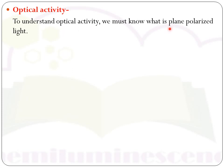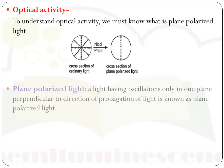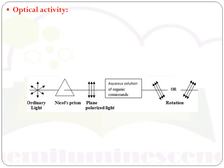Next is optical activity. To understand optical activity, we must know what plane polarized light is. Ordinary light consists of rays of different wavelengths that vibrate in all possible directions perpendicular to the plane of propagation. When ordinary light passes through a Nicol's prism — made of a calcite crystal — it becomes plane polarized light. Plane polarized light consists of rays of only one wavelength that oscillate in only one plane.